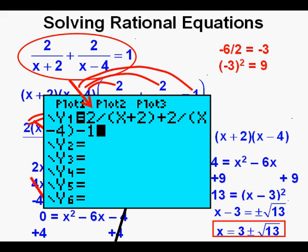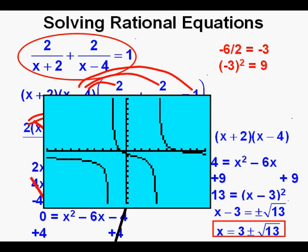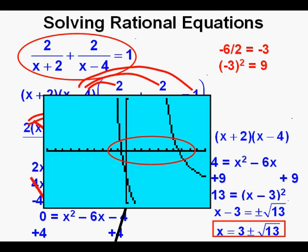We'll do one more thing with this problem — check our answer, or at least the reasonableness of our answer, by graphing on the calculator. Solving for 0, we enter the equation into y1 and here is the function graphed. We see two solutions along the x-axis: one between negative 1 and 0, and the other between 6 and 7, as calculated by completing the square. By changing the window, we get a better look at the solutions, which are easier to see.